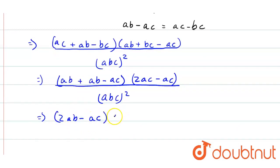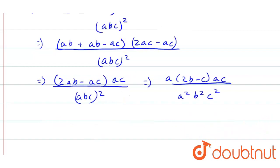Into AC divided by (ABC)² is (2AB - AC) into AC divided by A²B²C². So we can cancel A with A² and C will cancel with C². So what will be left is (2B - C) divided by B²C.